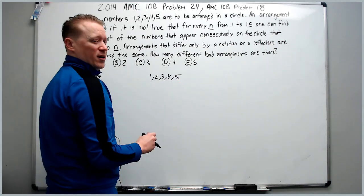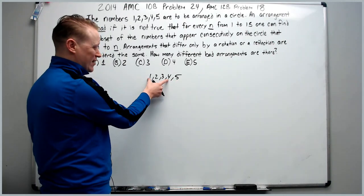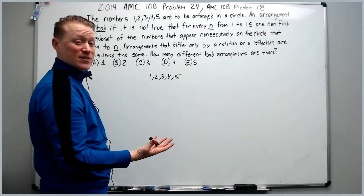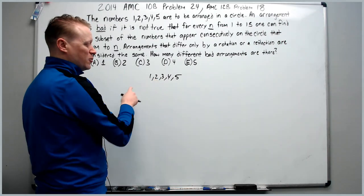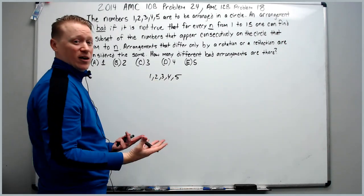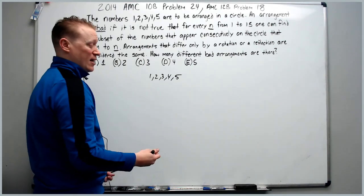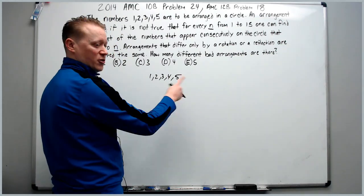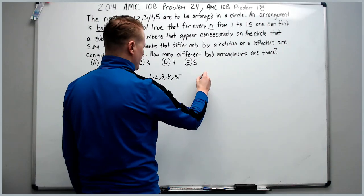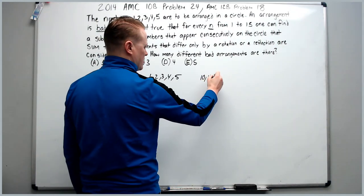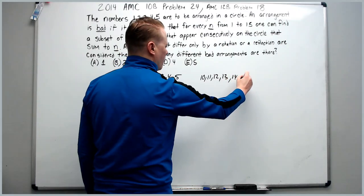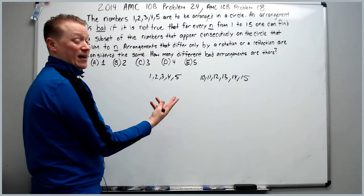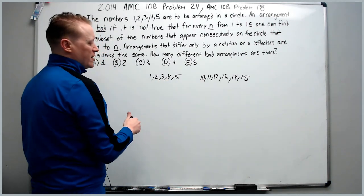Furthermore, the sum of 1 through 5 is 15. By taking away 5 we get 10, take away 4 and what's left is 11, and so on. Removing 5, 4, 3, 2, or 1 yields 10, 11, 12, 13, and 14 respectively, and keeping all five gives 15. So we don't need to check 10 through 15 either — those are already guaranteed.